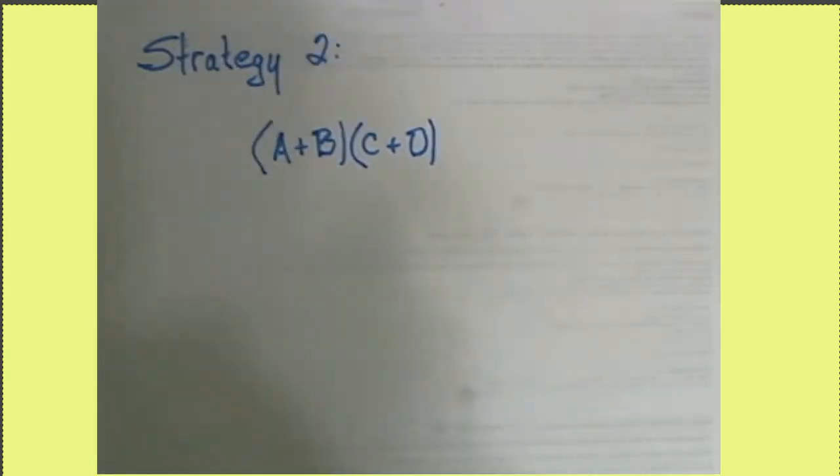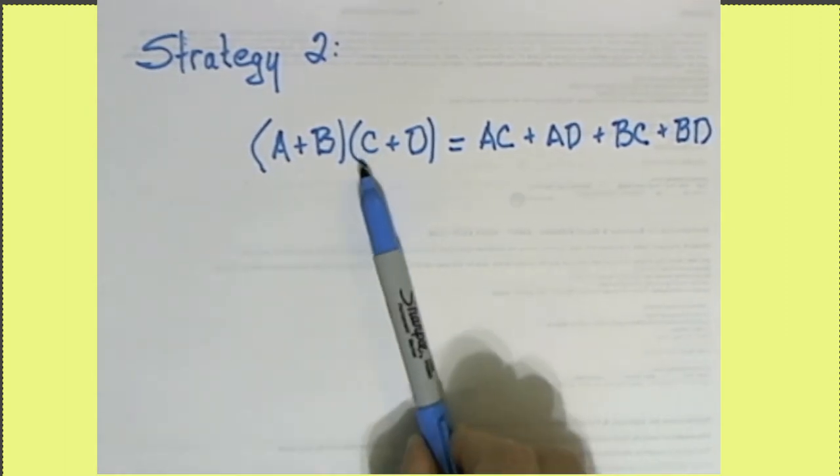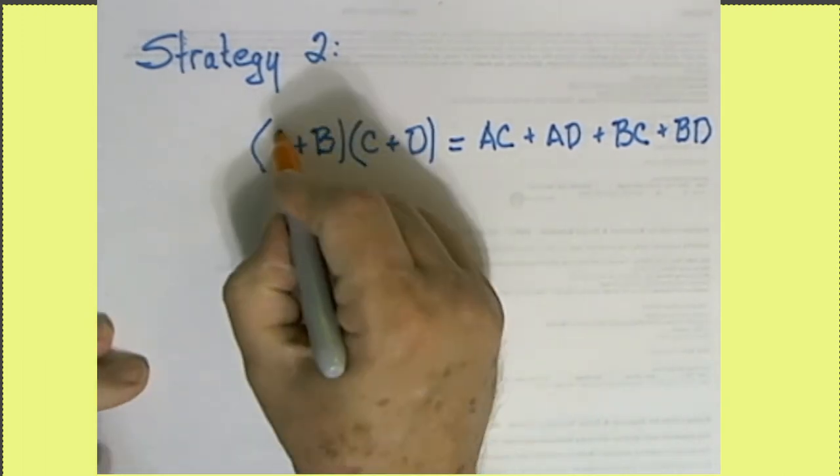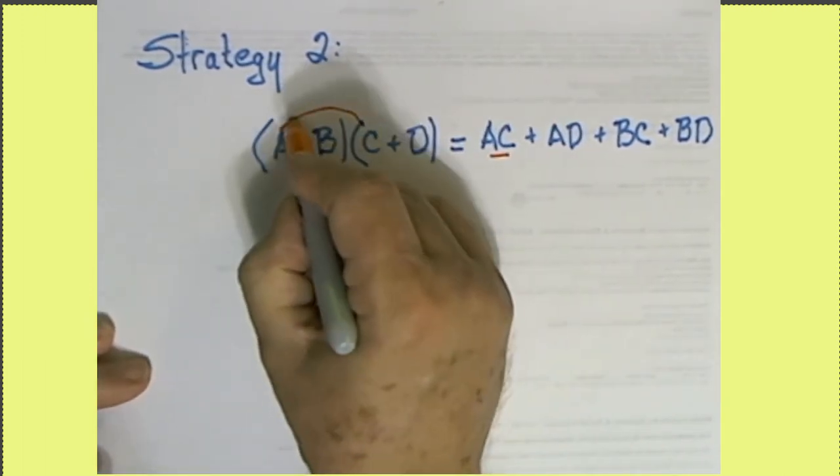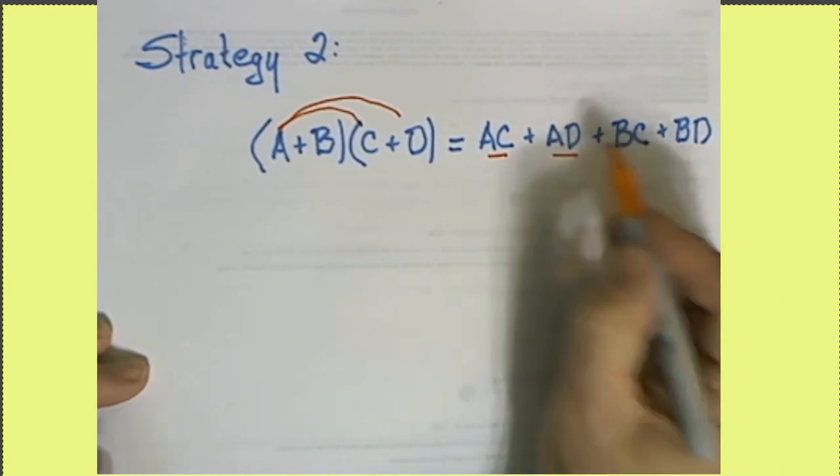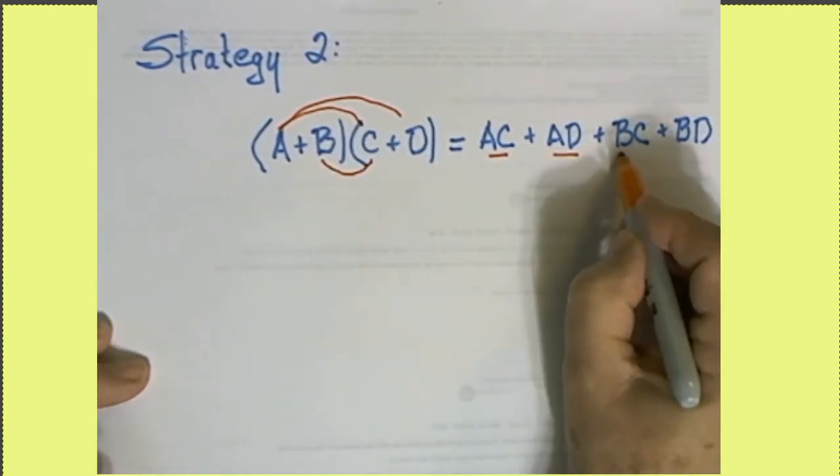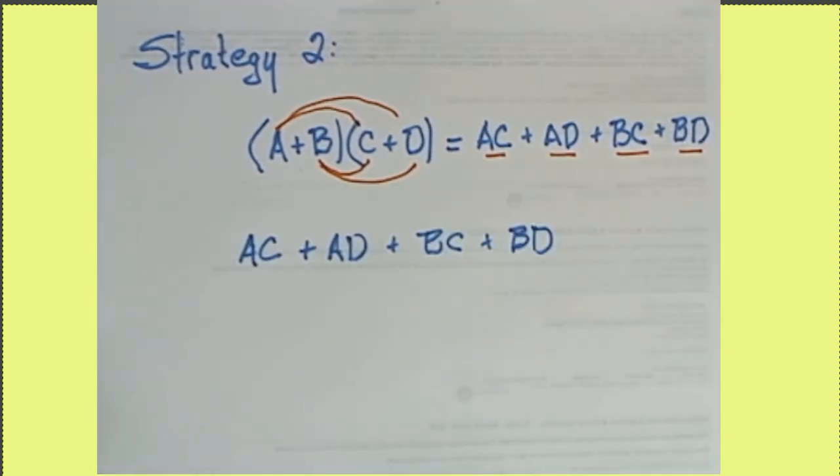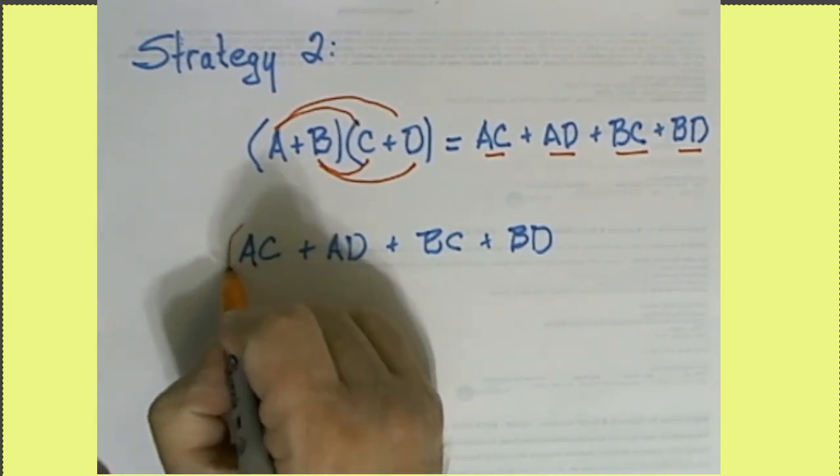Strategy 2 again comes from knowing something about multiplying. If we had A plus B times the sum of C plus D, then that would be A times C plus A times D plus B times C plus B times D. So if we were asked to factor AC plus AD plus BC plus BD, we could do that in the following way. It's called grouping and factoring.